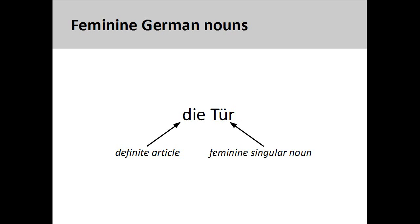The German noun 'Tür,' meaning 'door,' has a feminine grammatical gender, so its definite article is 'die.'